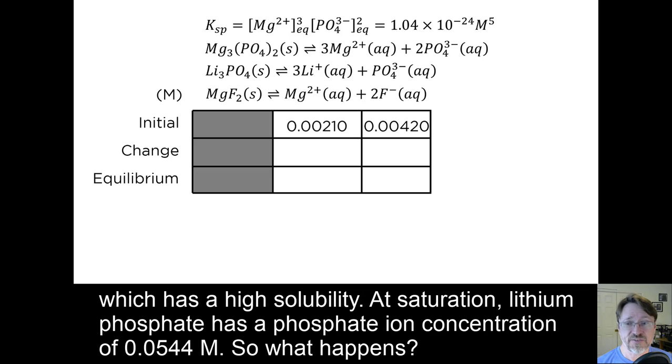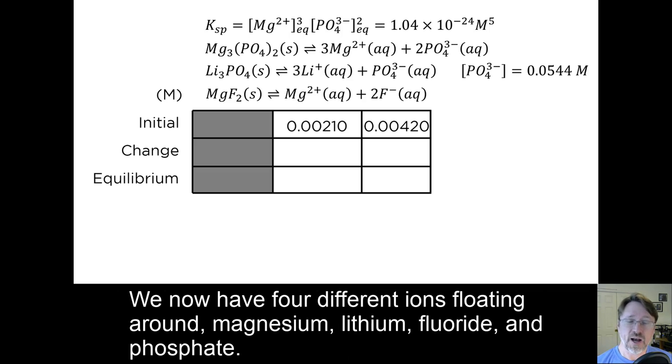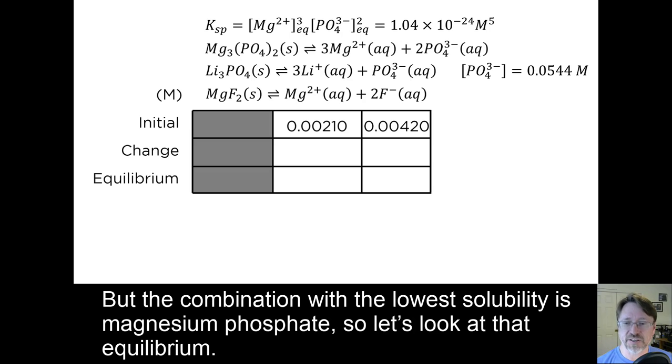So what happens? We now have four different ions floating around, magnesium, lithium, fluoride, and phosphate. But the combination with the lowest solubility is magnesium phosphate. So let's look at that equilibrium.